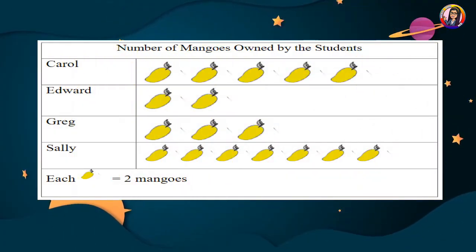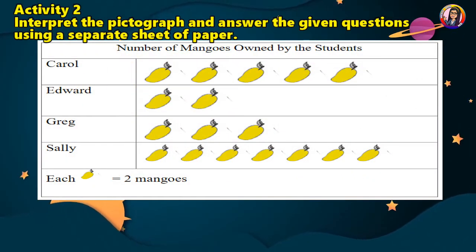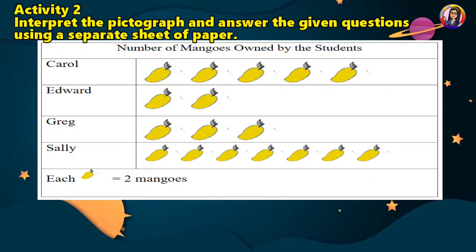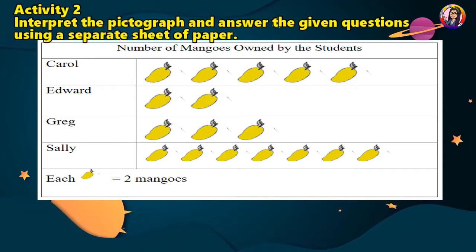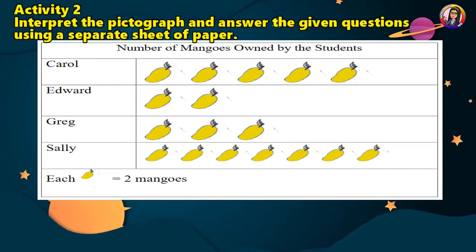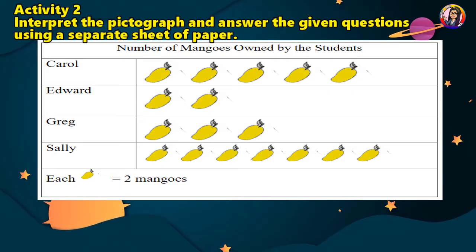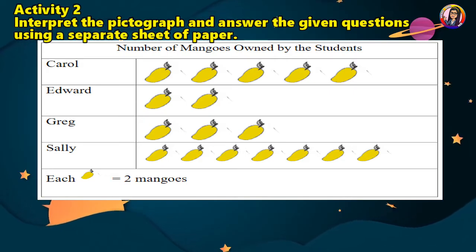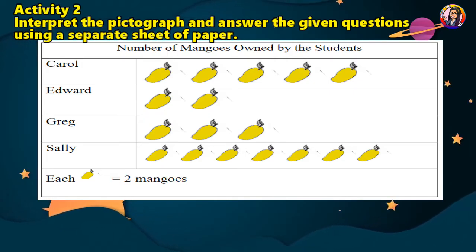Activity 2. Nice one! Let us continue with Activity 2. Interpret the pictograph and answer the given questions using a separate sheet of paper. Be guided with the following questions.